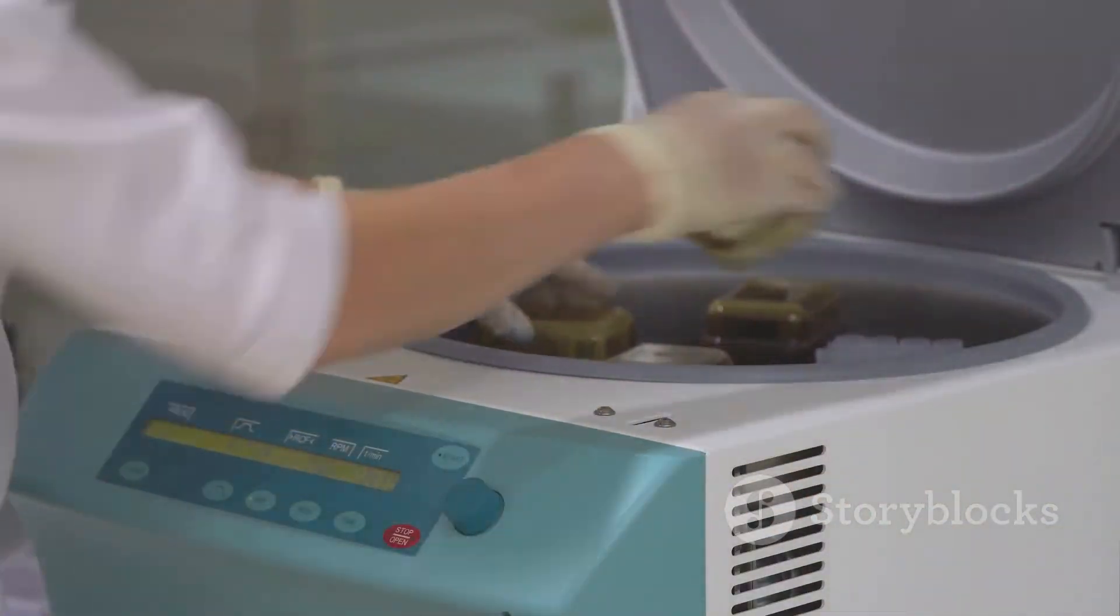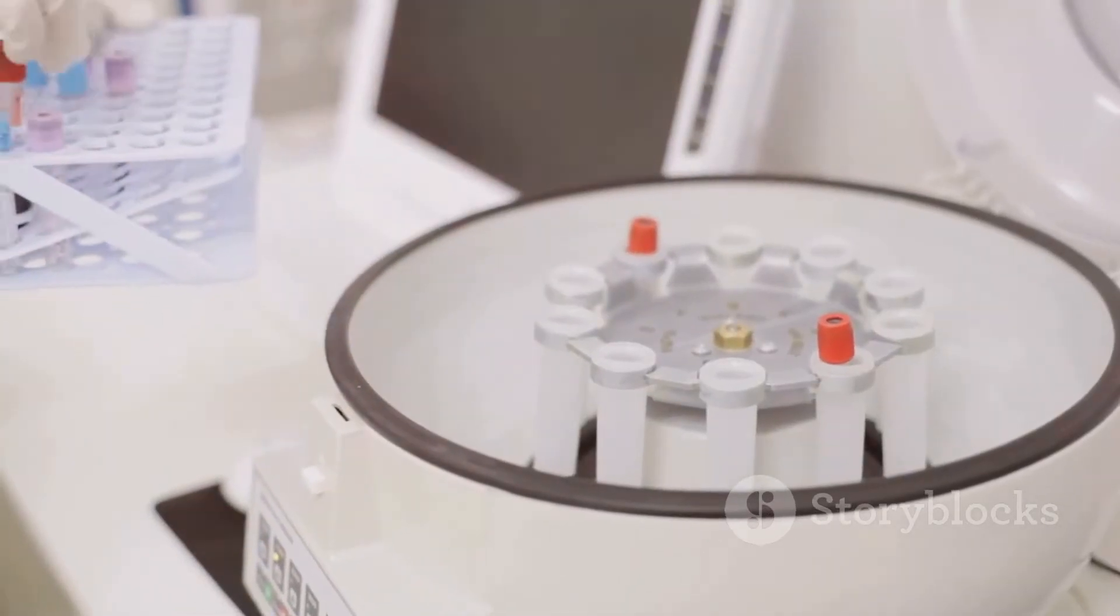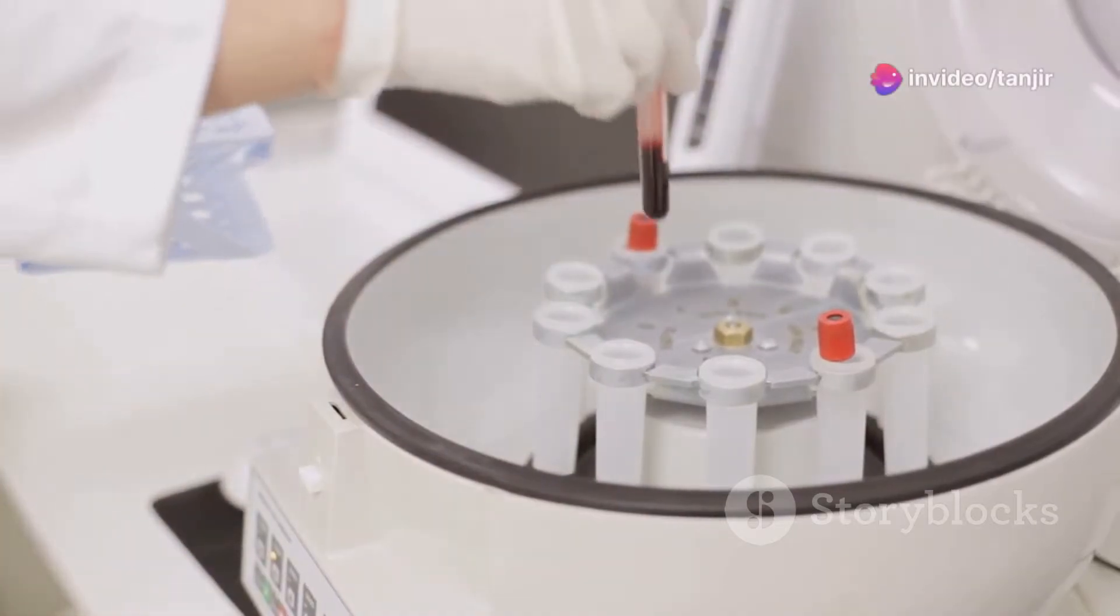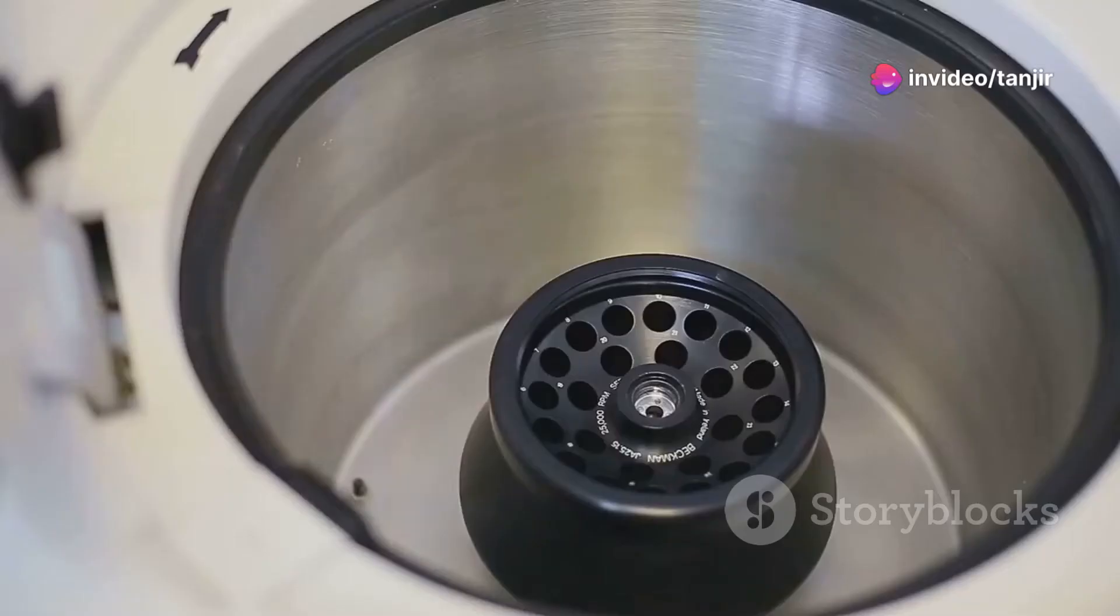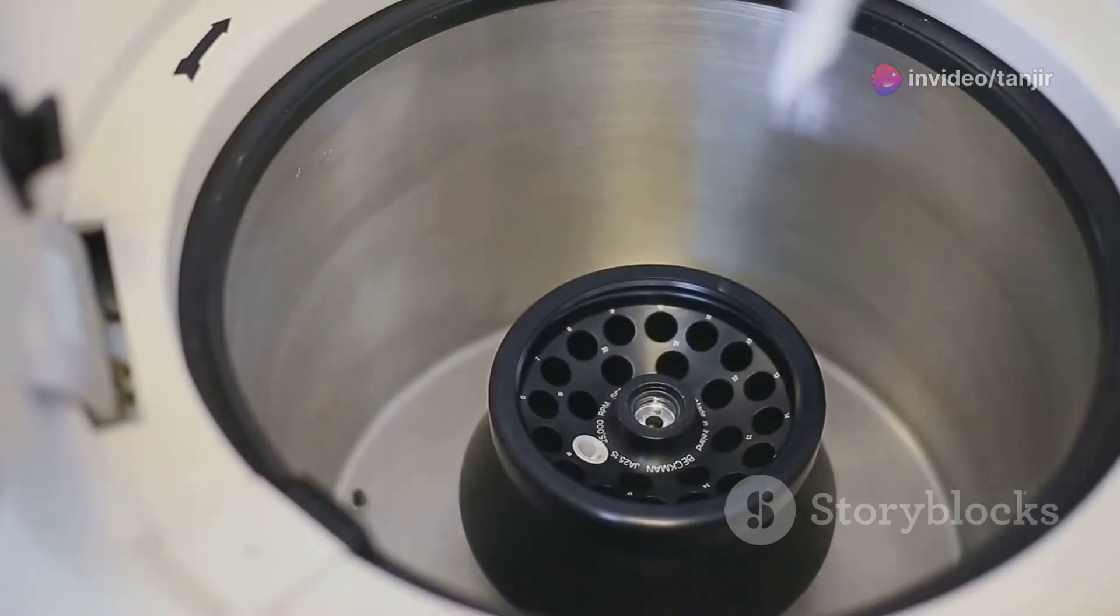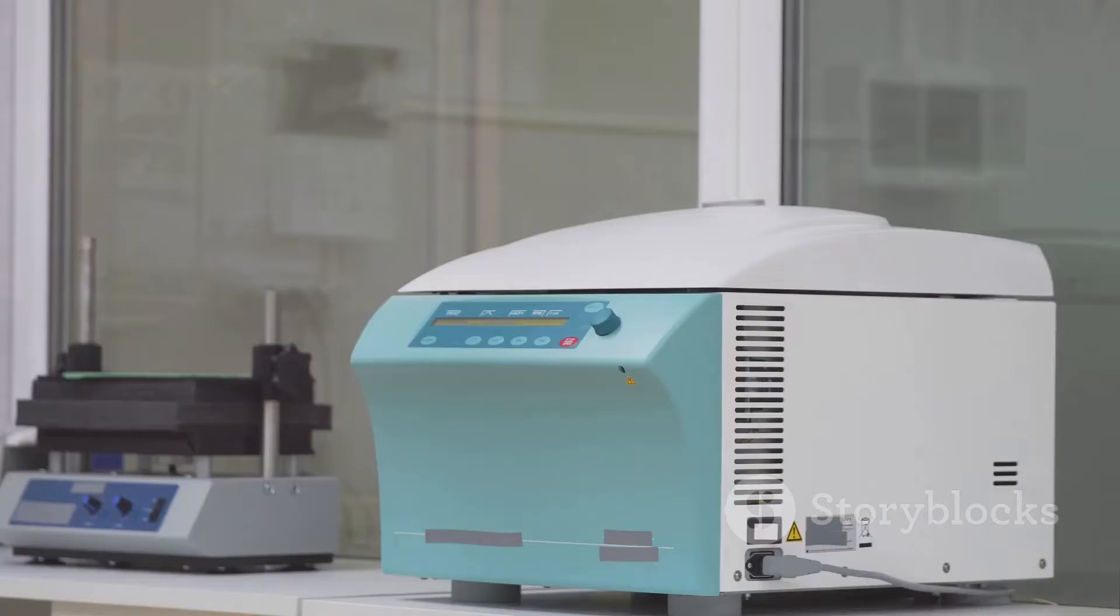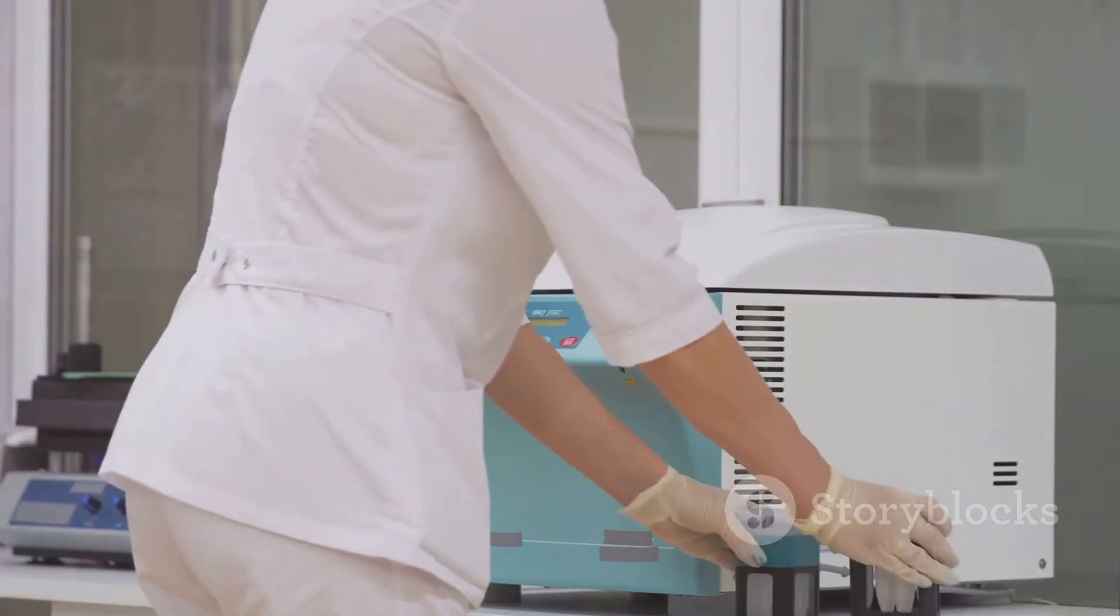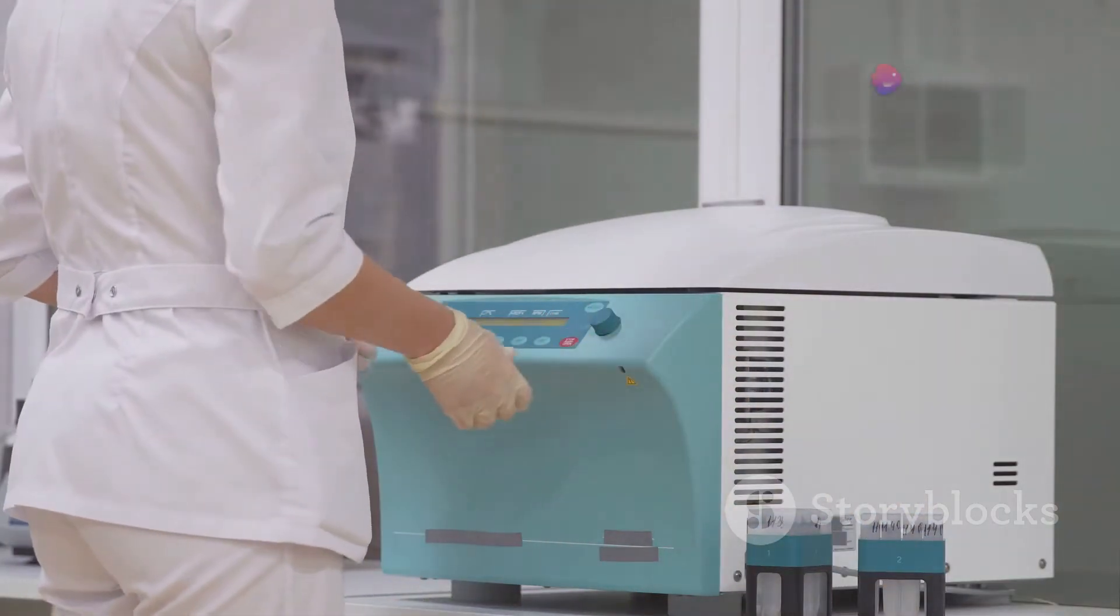Enter the centrifuge. Uranium gas is pumped into tubes, then spun at super high speeds. Because U-238 is heavier, it gets flung to the edges like the water in our salad spinner. Meanwhile, the lighter U-235 stays closer to the centre.